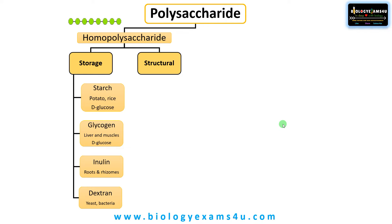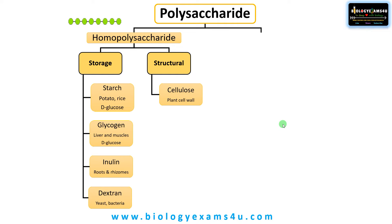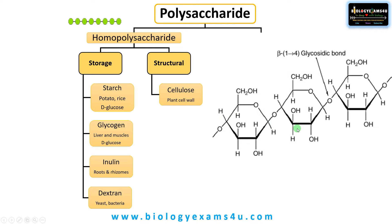Moving on to structural polysaccharides, which provide structure and rigidity to living cells and structures. The first is cellulose, the most abundant organic molecule on earth. The plant cell wall is made up of cellulose. It is a tough homopolysaccharide composed of glucose units linked by beta-1,4 glycosidic linkage, forming the main structural component of the plant cell wall. Its strong hydrogen bonds and linear chains give it remarkable strength and rigidity, providing support and stability to plants. Present in wood, paper, cotton, etc.